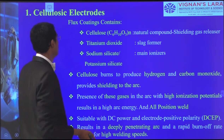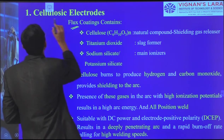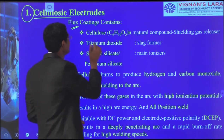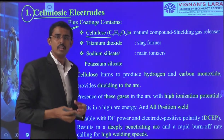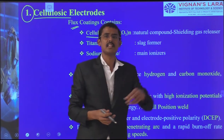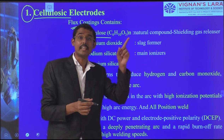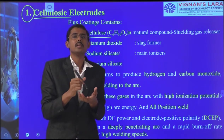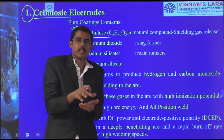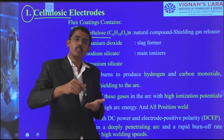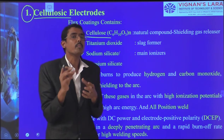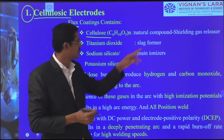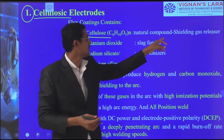The flux coating in cellulose electrodes contains cellulose material, which is used mainly for creating shielding gas. We have not additionally supplied gas cylinders like in gas welding; instead, this consumable electrode, when touched, creates the shielding gas and protects the weld pool. Movement of the electrode also creates improper shielding. The shielding gas comes from the cellulose — it is a shielding gas releaser.